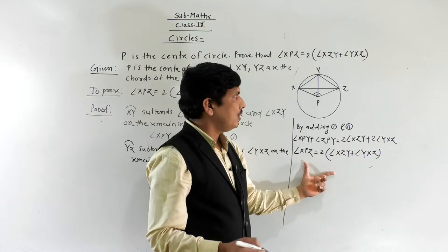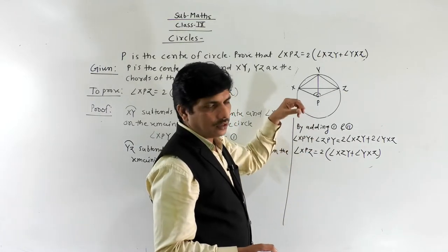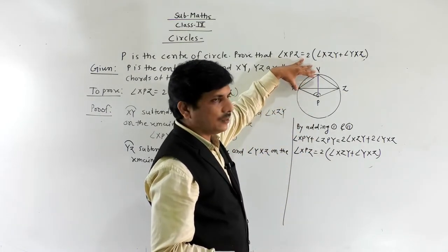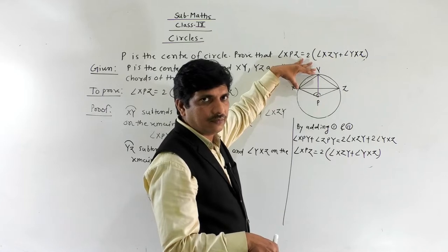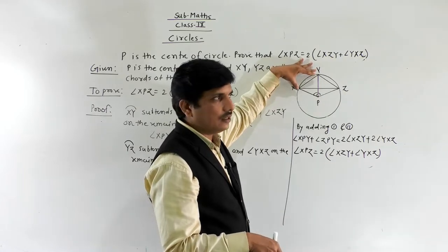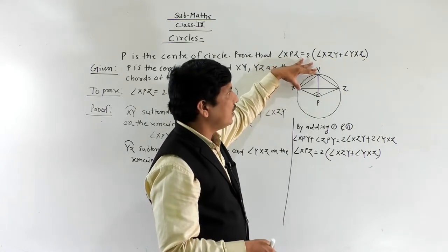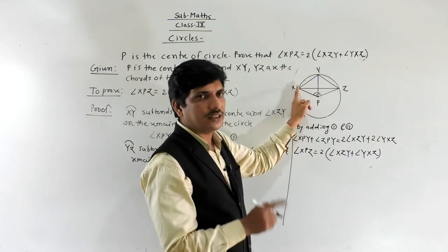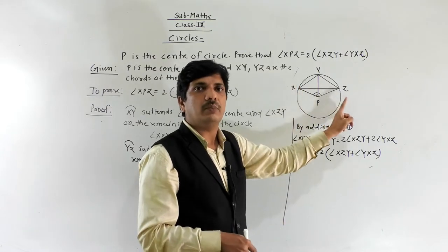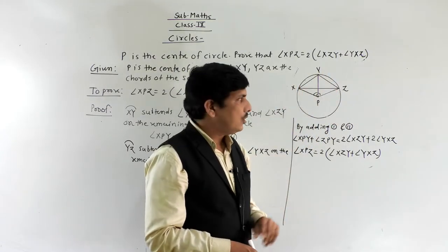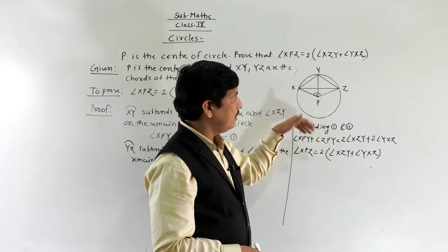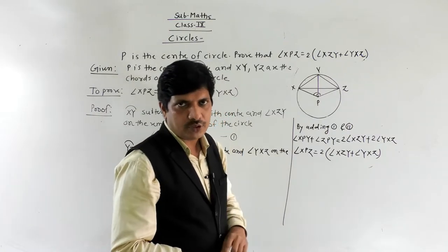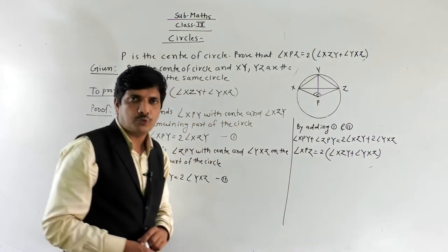We have proved angle XPZ equals 2 times the sum of angle XZY and angle YXZ. The property used here is: the arc which subtends an angle at the center is 2 times the angle subtended by the same arc on the remaining part of the circle. This property is what we need to use in such problems.